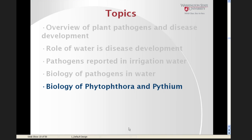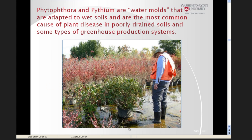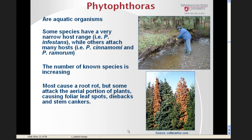I'd like to spend time talking about the biology of Phytophthora and Pythium, since these are the most common and probably most important pathogens disseminated in water. These water molds are adapted to wet soils and commonly cause disease in poorly drained soils and some greenhouse production systems. Some species have a very narrow host range, such as Phytophthora infestans which causes late blight, while other species attack many hosts, such as Phytophthora cinnamomi and Phytophthora ramorum.